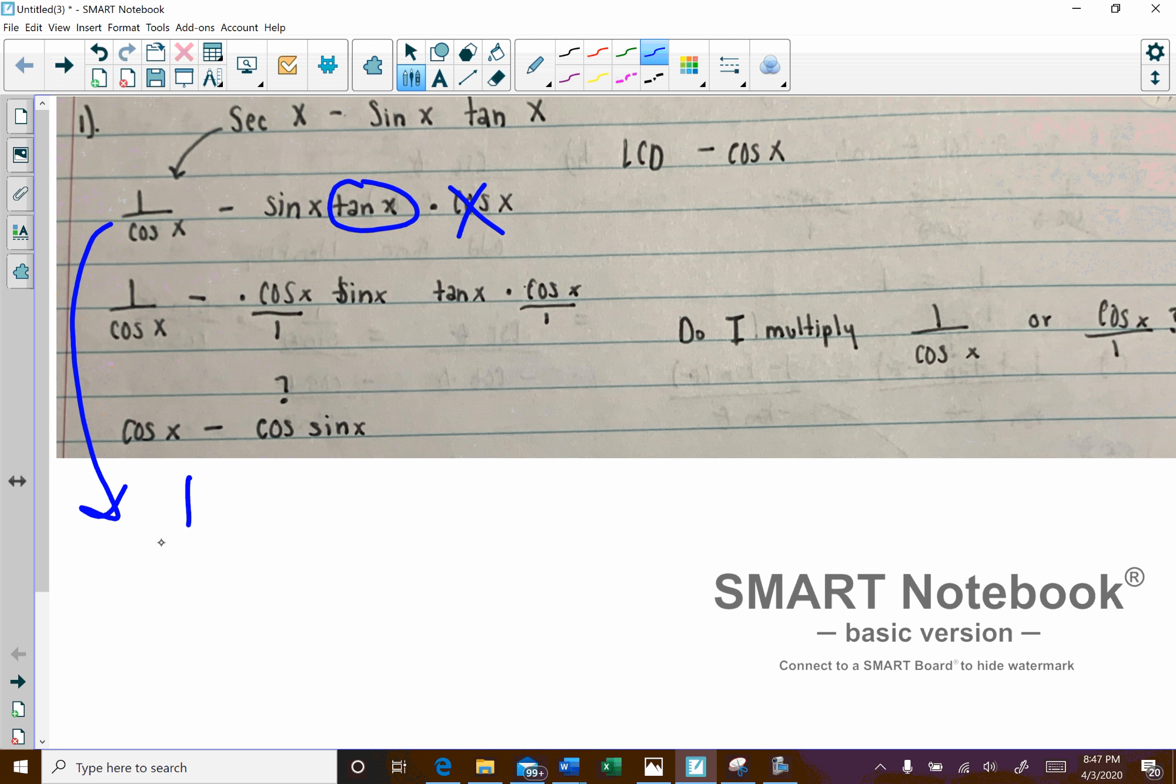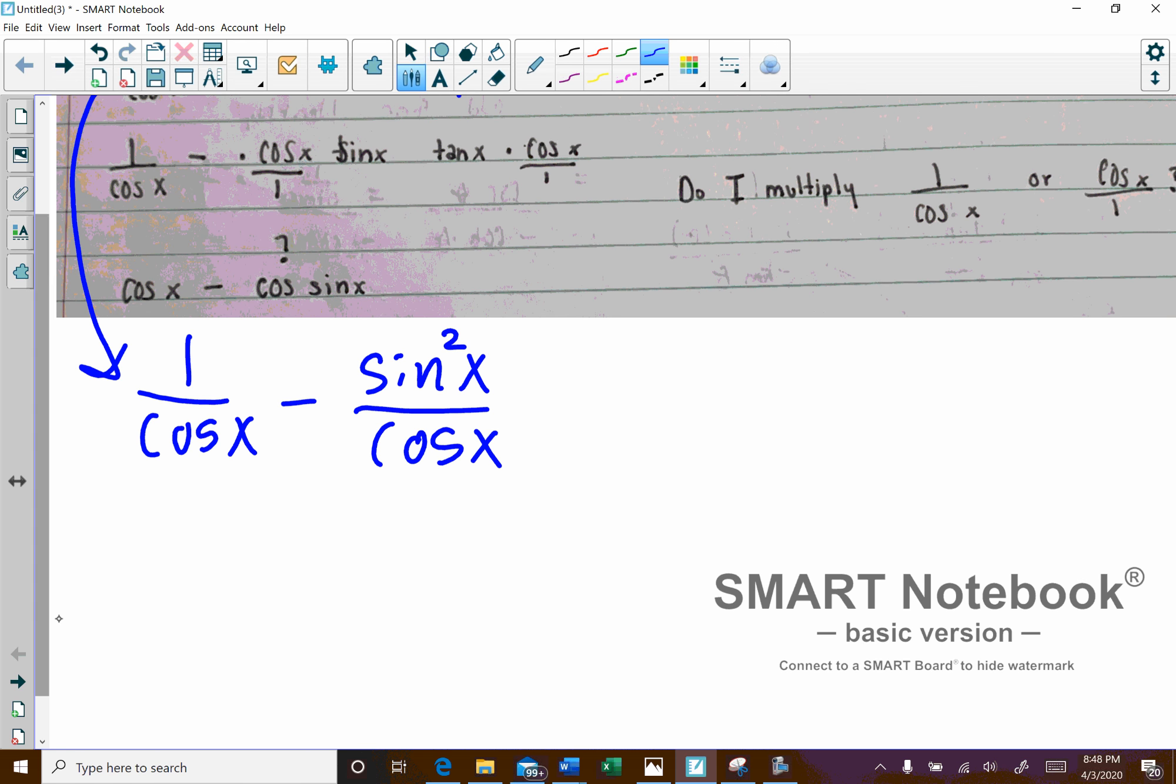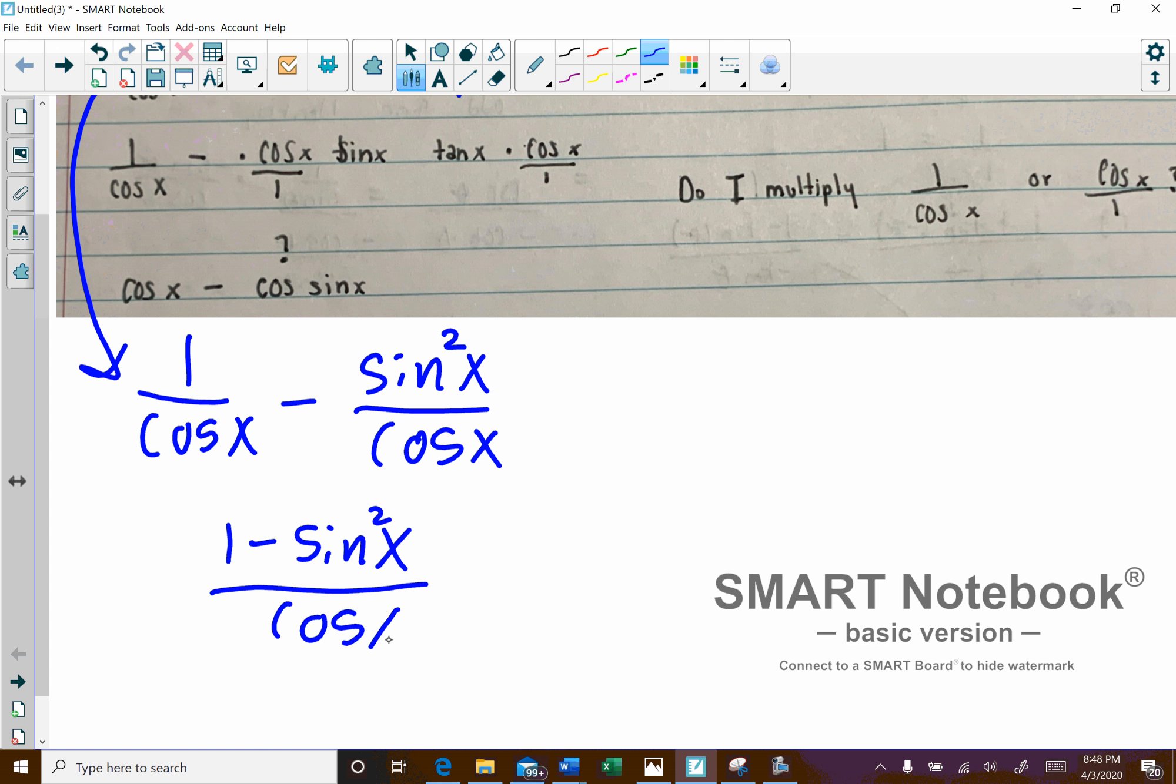So we have 1 over cosine x minus, and what's going to happen is you should end up with sine x squared. Because tangent will turn into sine over cosine, and then you'll have that over cosine x. So you have your LCD now. And then this will come together as 1 minus sine x squared over cosine x.